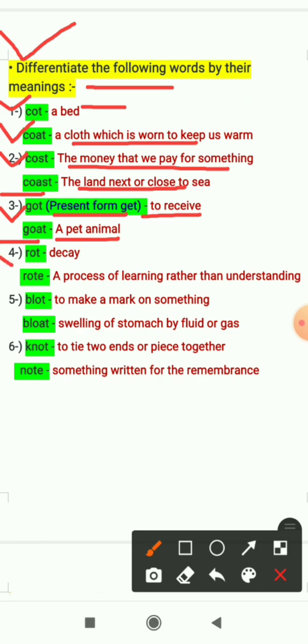Fourth word is rot, it means decay, something which is not useful. Next word is rote. It means a process of learning rather than understanding, a process of learning in which someone learns something rather than understanding.